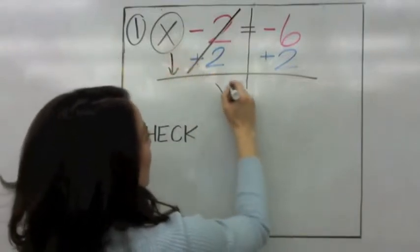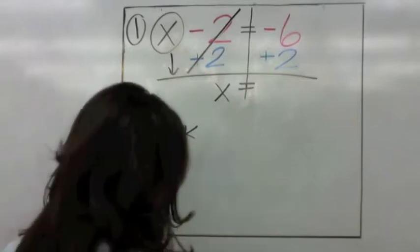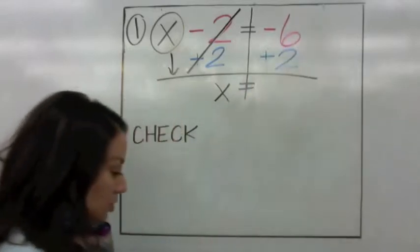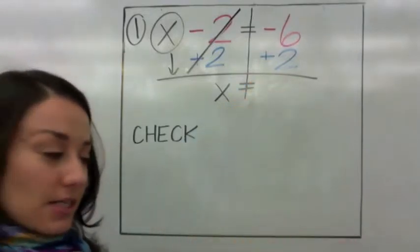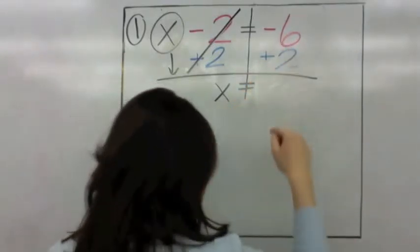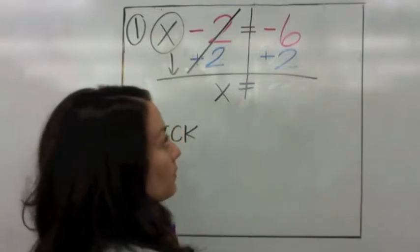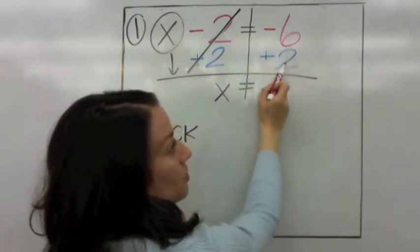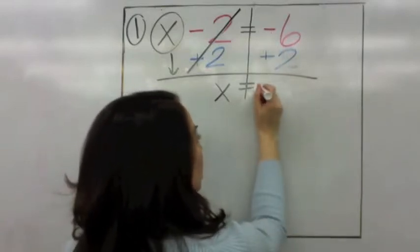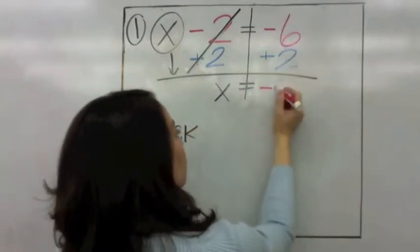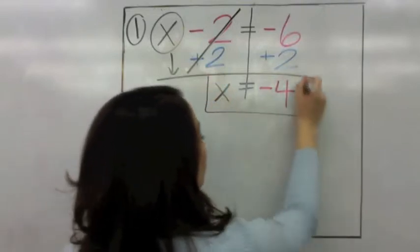Bring down the x. Now we're trying to figure out what x equals. We have a negative 6 and a positive 2. Do they have different signs? Yes. So different signs subtract. We're going to subtract 6 take away 2, and keep the sign of the higher number. The bigger number is 6, and the sign next to 6 is negative. So x equals negative 4.